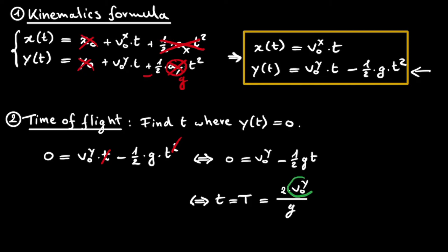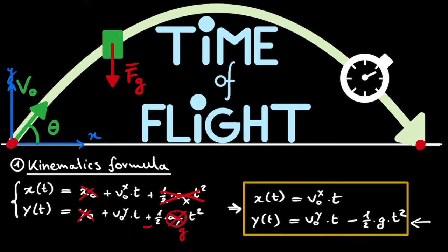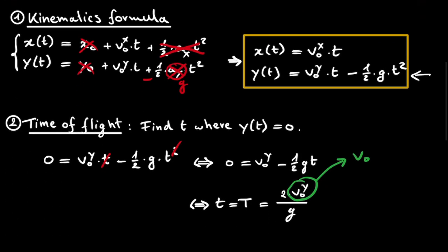And the only thing left here is to find an expression for this v0y, the initial velocity in the y direction, since the only parameter that we are given is v0, the magnitude of the initial velocity. However, if we look back at our figure, we see that the initial velocity v0 of our object makes an angle theta with the horizontal plane. Now this immediately means that the y component of our initial velocity, v0y, is simply the sine of theta multiplied with v0. So we can directly fill this in in our formula. We get that the time of flight is equal to 2 multiplied by the initial velocity multiplied by the sine of theta divided by our gravitational constant.